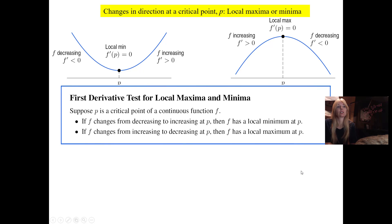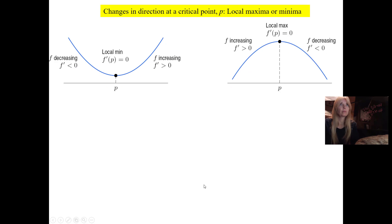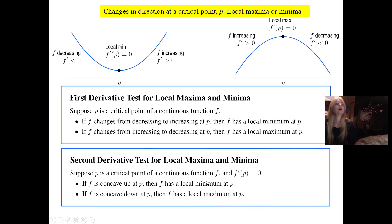And this is what we call the first derivative test for local max and min. The big key is when you set the derivative equal to zero, that says you have a critical point. Don't know if it's a max or min unless you go through this test.